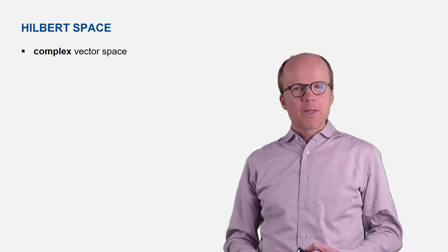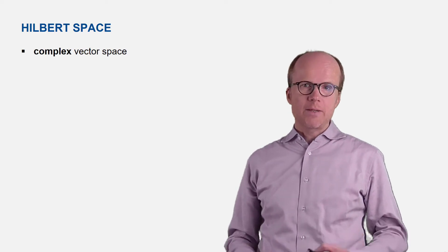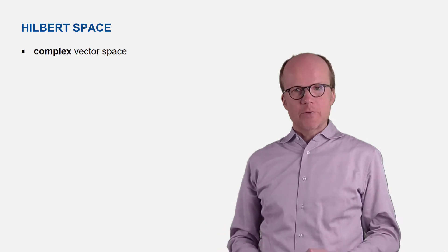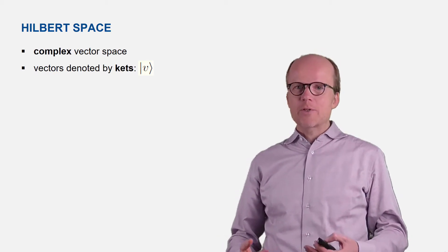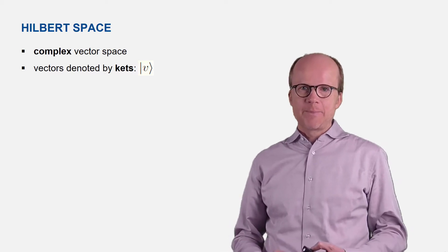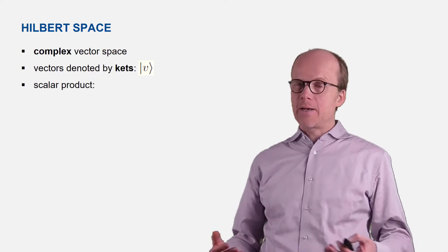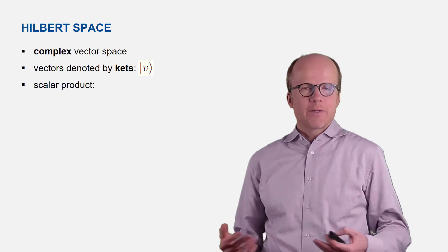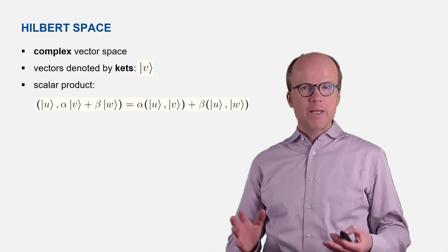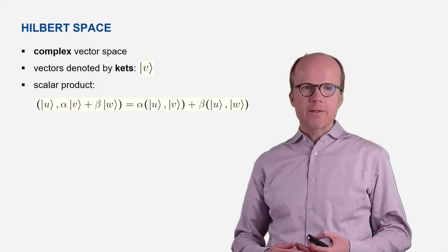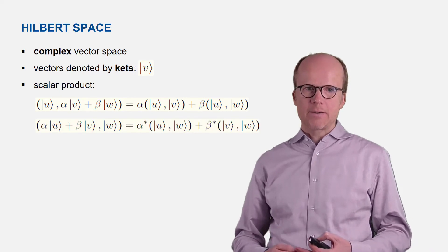Quantum theory is described in Hilbert space. Hilbert space is a vector space over the complex numbers. So you might be familiar with linear algebra over the real numbers, with real vector spaces — quantum theory is described in a complex vector space. In quantum theory one uses a special notation: vectors are commonly denoted by so-called kets. Hilbert space is endowed with a scalar product, and the scalar product in Hilbert space has the familiar properties: it is linear in the second argument. But be careful — because it's a complex vector space, it is no longer linear in the first argument; it is anti-linear in the first argument.